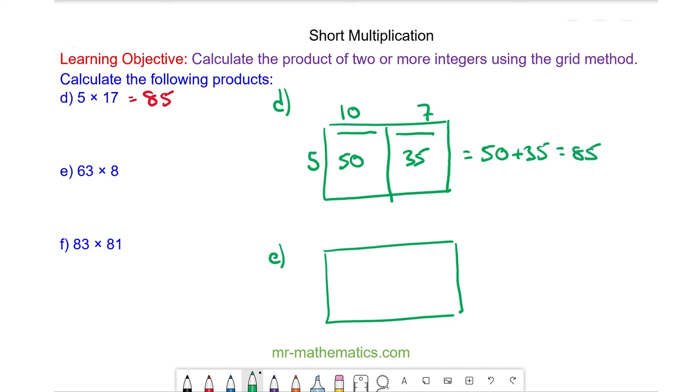For question e we have 63 which is 60 plus 3 with 8 here. The area of this section is 8 times 60 which is 480 and this section which is 3 times 8 is 24. So the total area is 480 plus 24 which is 504.